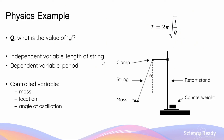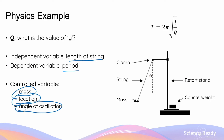In this experiment, I'll vary the length of the string — which is the independent variable — and measure the period of oscillation, which is the dependent variable. Everything else that could affect the experiment should be kept constant as controlled variables: the mass of the pendulum, the location of the oscillation (indoors vs outdoors), and the angle of oscillation from which I start.